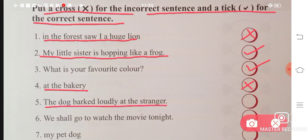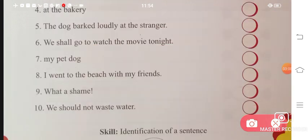The dog barked loudly at the stranger. The dog barked at an unknown person, so this is also a sentence. Next is number six, 'We shall go to watch the movie.' Perfect, it is a sentence.